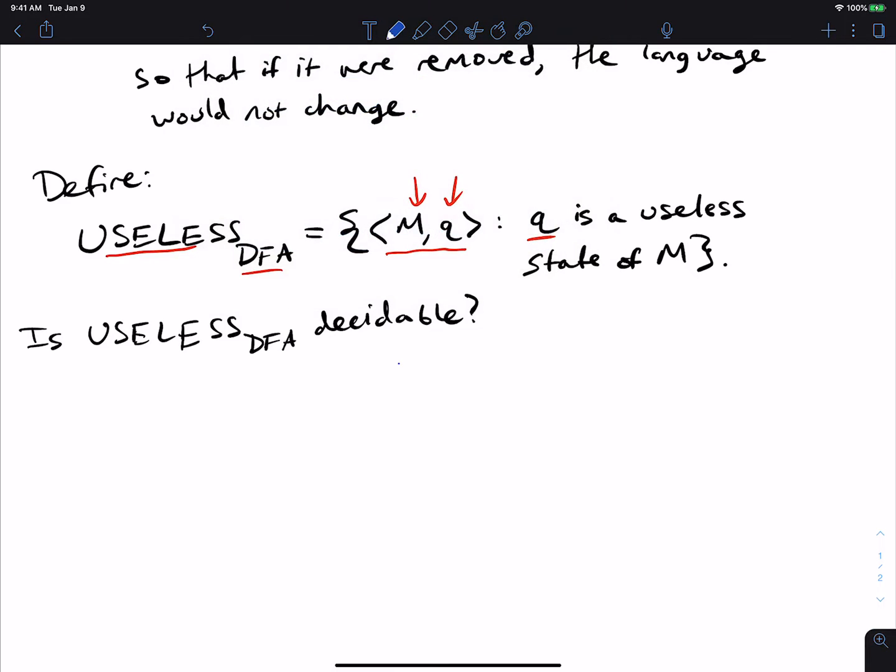Recall that a decidable language is one for which there is an algorithm that always halts. So how can we think about this?